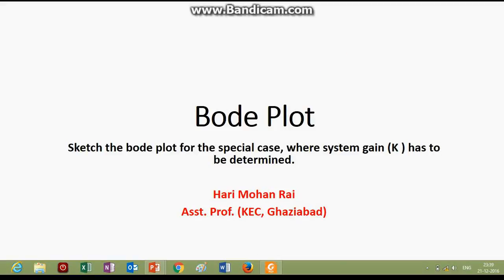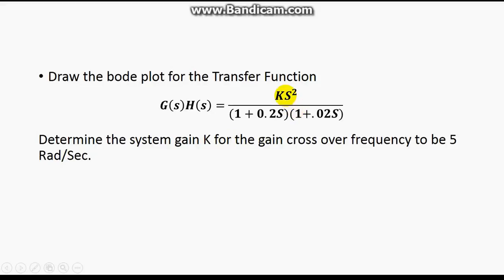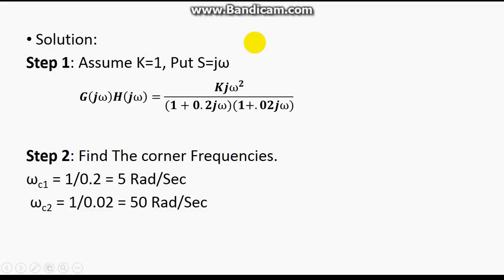Hello everyone. Today we'll see an example of a special case of Bode plot where we have to determine the system gain K, and the gain crossover frequency will be given. This is a special case where the constant gain value K is not given. The question is: draw the Bode plot of the given transfer function G(s)H(s) = Ks² / [(1 + 0.2s)(1 + 0.02s)], where you have to determine the system gain K for the gain crossover frequency to be 5 radians per second.